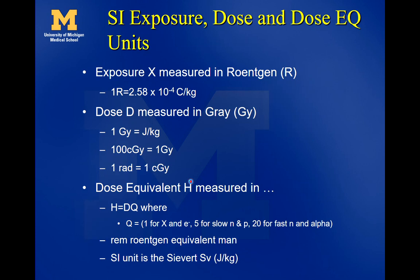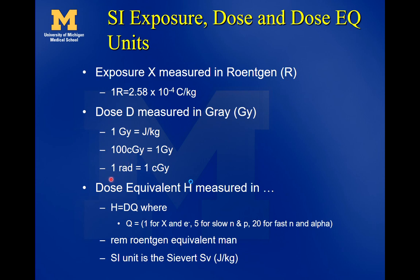Here are dose units to memorize. Exposure is measured in Roentgen; one Roentgen equals 2.58 × 10⁻⁴ coulombs per kilogram. Dose is measured in gray; one gray equals one joule per kilogram. Also, 100 centigrays (cGy) equal one gray in SI units. One rad equals one centigray — rads aren't commonly used anymore but you may hear the term.